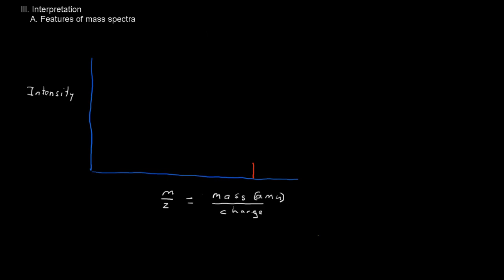There are two important peaks in a mass spectrum. The first is known as the molecular ion, which does not always appear. The molecular ion is the unfragmented ion — the molecule was struck by an electron, lost an electron to become an ion, and came through the mass spectrometer intact with no bonds broken. Assuming only one electron was lost, the molecular ion gives you the molar mass of the compound. An electron has vanishingly small mass, so the molecular ion corresponds to the atomic and therefore molar mass of the compound.